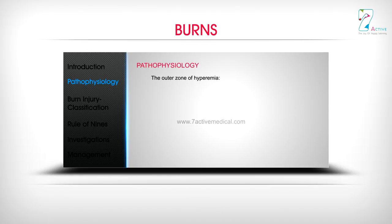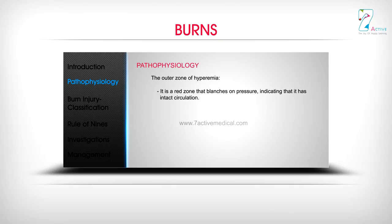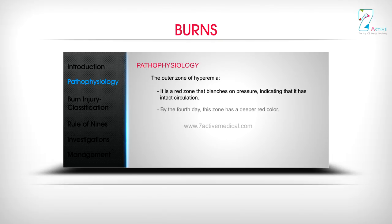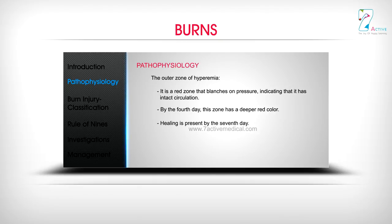The outer zone of hyperemia is a red zone that blanches on pressure, indicating that it has intact circulation. By the fourth day, this zone has a deeper red color. Healing is present by the seventh day.